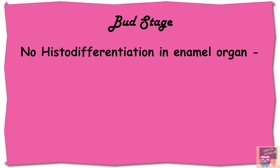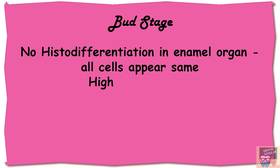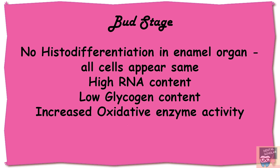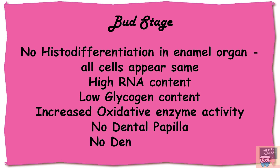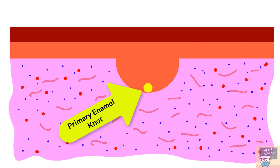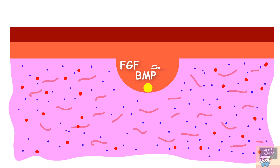Compared to dental lamina cells, the tooth bud cells have high RNA content, low glycogen content, and show increased oxidative enzyme activity. In the bud stage there is no dental papilla and no dental follicle. By the end of the bud stage, the primary enamel knot appears, expressing factors like FGF, BMP, and SLIT.